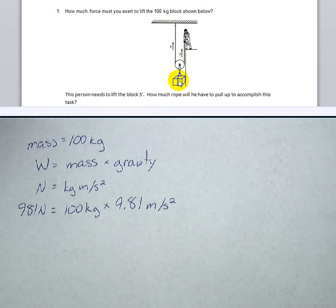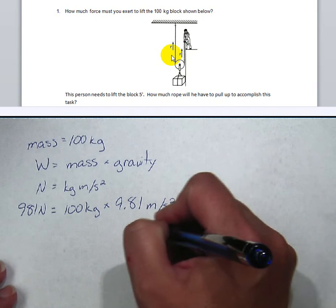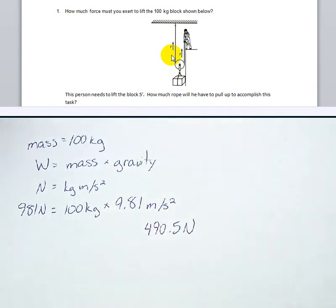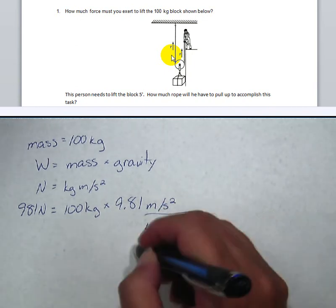So instead of 981 newtons, that weight is going to be spread out between the two. So I'm just going to divide it by two. So 981 divided by two equals 490.5 newtons. Okay, so that's the first part of it.